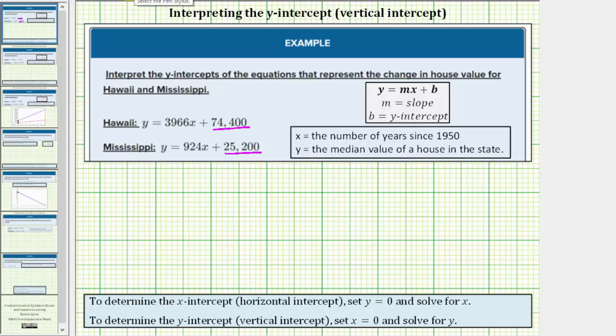In general, if we have an equation and want to find the y-intercept, we set x equal to zero and solve for y. So if we didn't recognize these equations were in slope-intercept form, for example, for the equation for Hawaii, if we set x equal to zero, we'd have y equals 3,966 times zero plus 74,400, which does give us 74,400.